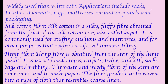Second - Silk cotton fiber: Silk cotton is a silky, fluffy fiber obtained from the fruit of the silk cotton tree, also called kapok. It is commonly used for stuffing cushions and mattresses and for other purposes requiring a soft, voluminous filling. Third - Hemp fiber: Hemp fiber is obtained from the stem of the hemp plant. It is used to make ropes, carpets, twine, sail cloth, sacks, bags, and webbing. The woody waste fiber is sometimes used to make paper.